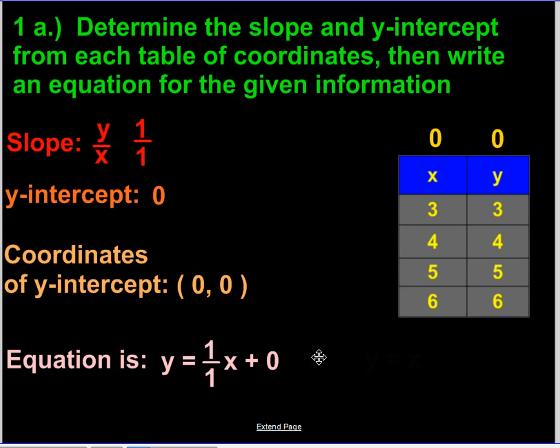And because it's 1, we really don't even need to have a 1. We could just have the x. And plus 0, we don't need to show that either. So we could rewrite this as simply y equals x. The 1 is assumed to be there and plus 0 is unnecessary.